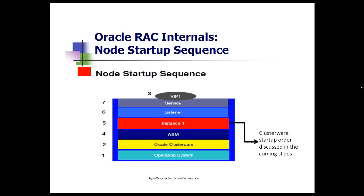Here is the node startup sequence. You might be administrating a RAC database or a cluster, and you might wonder how things start up when a node is rebooted or boots up. Generally, when a node boots up, it is the underlying operating system that comes up first — the OS could be Windows, Linux, or Unix. If you don't have vendor-level clusterware, it will be Oracle Clusterware that will be sitting on the operating system. After the operating system starts up, your clusterware will start up automatically.